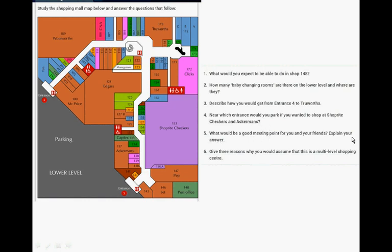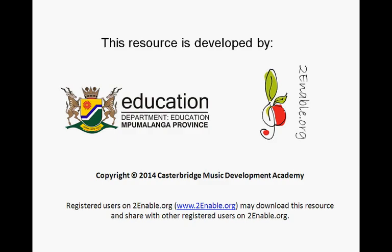Near which entrance would you park if you wanted to shop at Shoprite, Checkers, and Ackermans? What would be a good meeting point for you and your friends? Explain your answer. Give three reasons why you would assume that this is a multi-level shopping center. And that concludes Maps and Scales. Thank you very much.